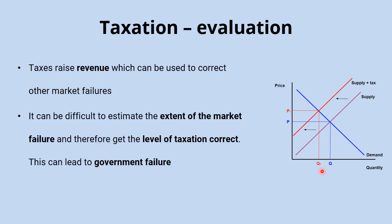On the negative side, it can be very difficult to estimate the extent of the market failure, which makes it very difficult to get the level of taxation correct. For example, estimating the monetary cost of noise pollution caused by building a new airport is really difficult to get absolutely spot on. So on the diagram, the tax shifts the supply curve to the left — but who's to say we shouldn't be shifting it much further left if the airport is having really significant negative effects on many households?